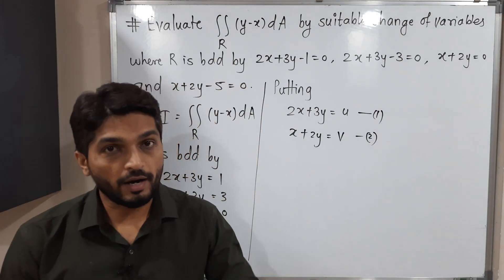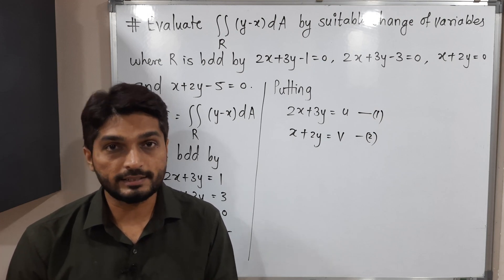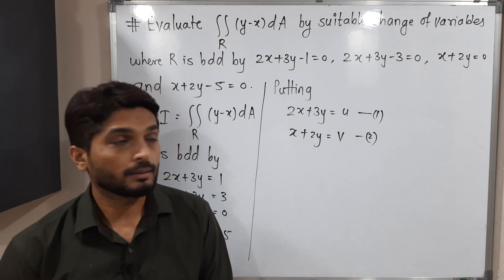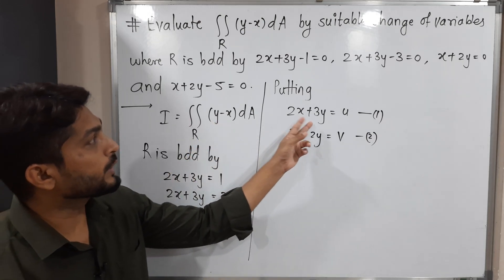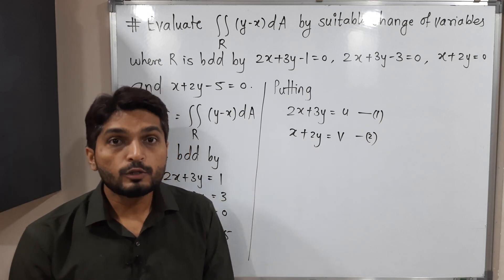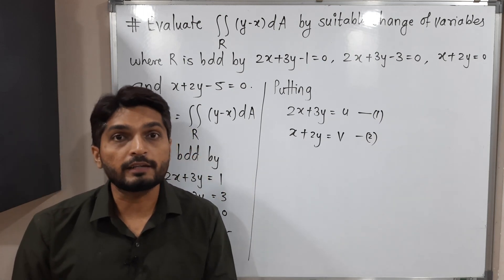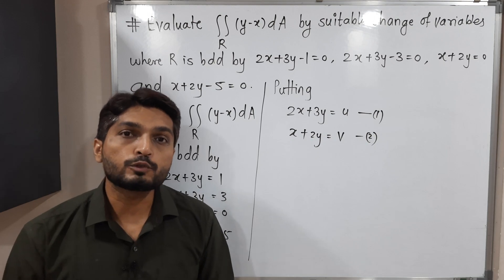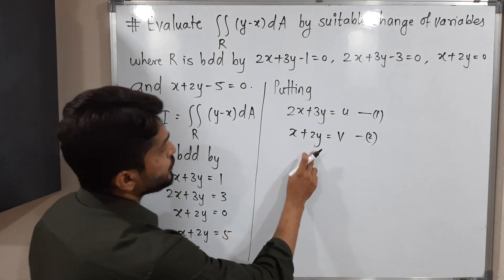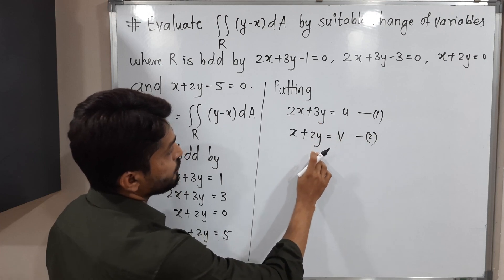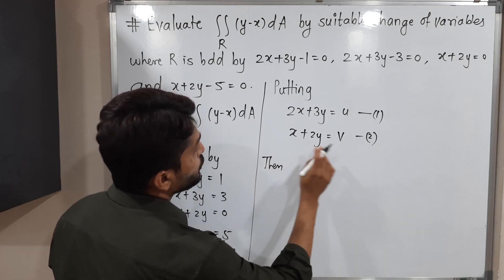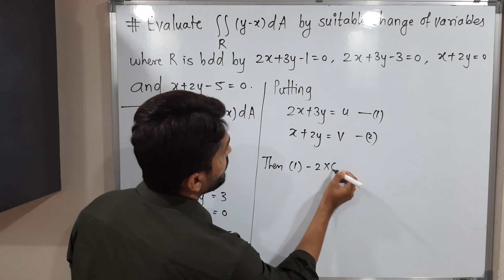After substitution we need to find the Jacobian. But since the integrand contains y minus x, we first need to find the values of x and y by solving the two equations simultaneously. To find y, we eliminate x by multiplying equation 2 by 2.